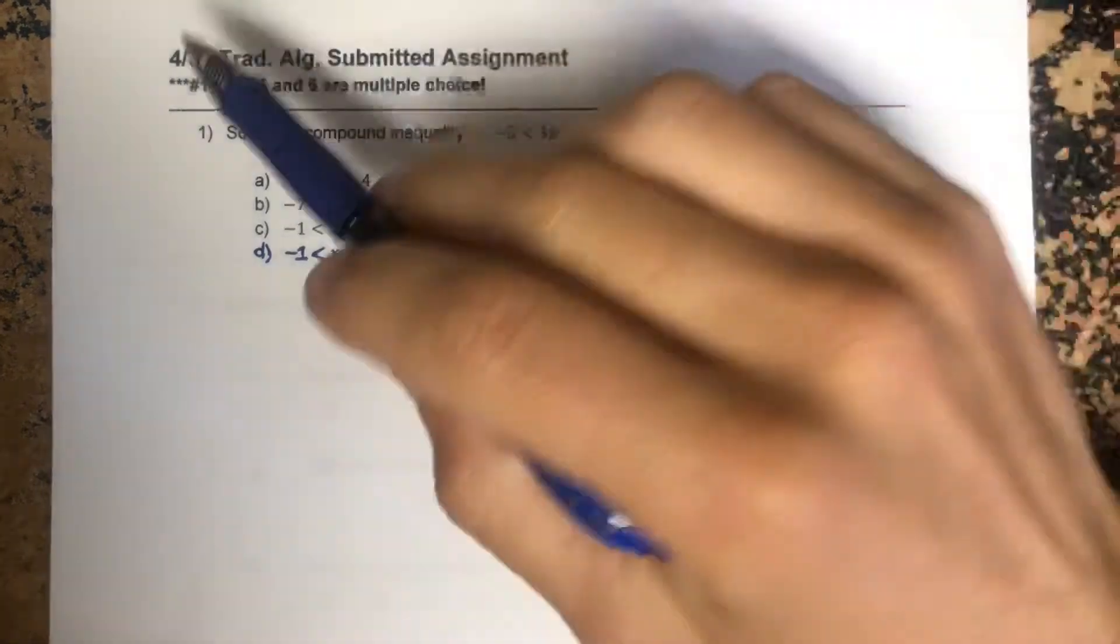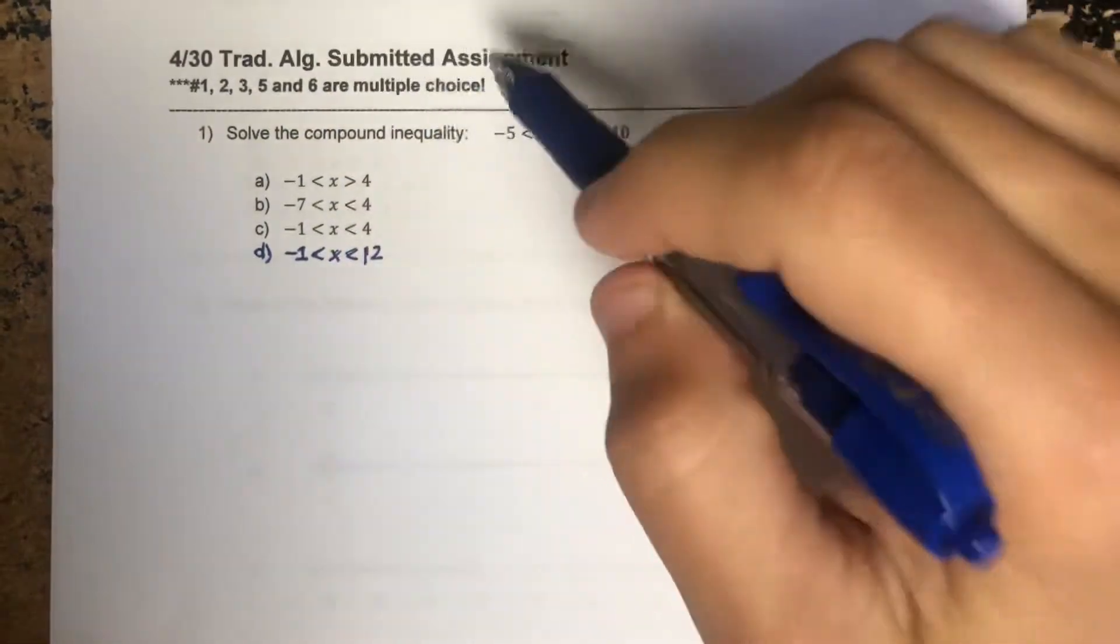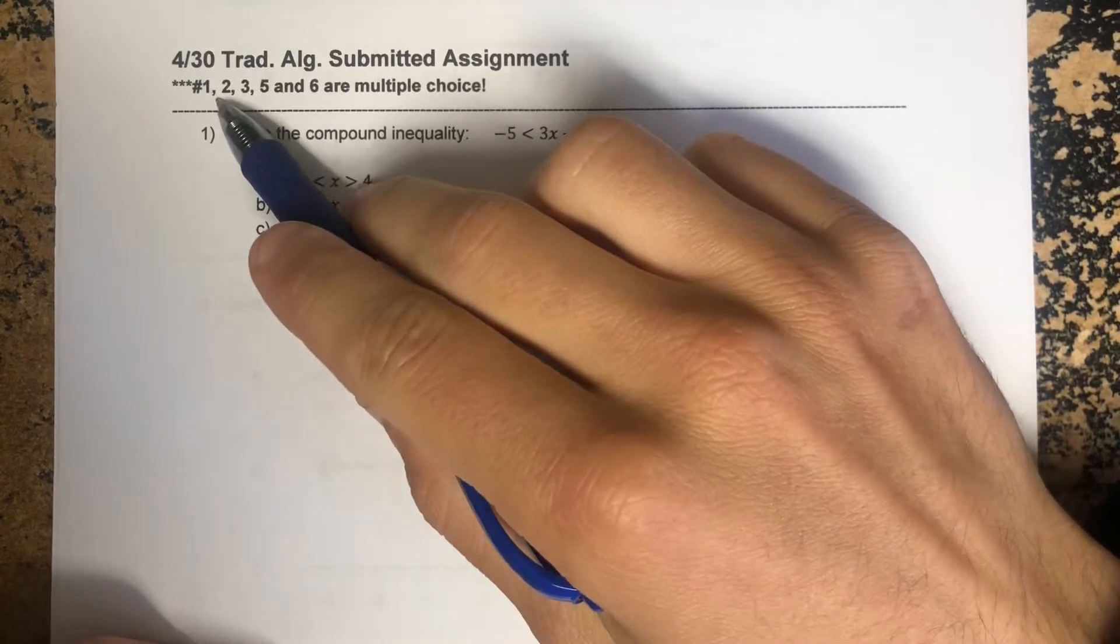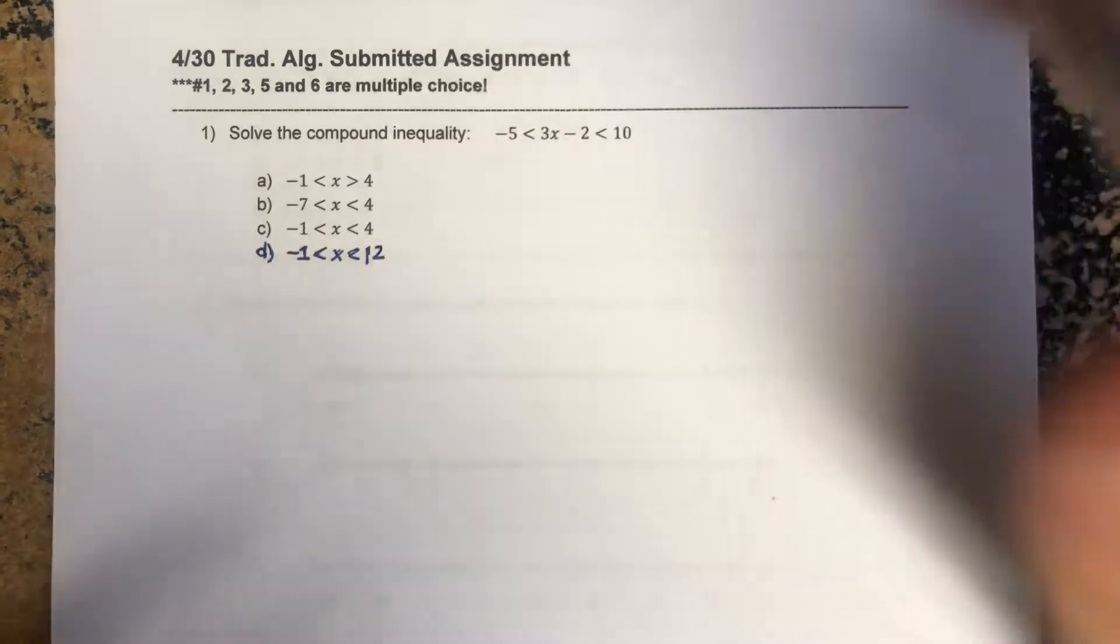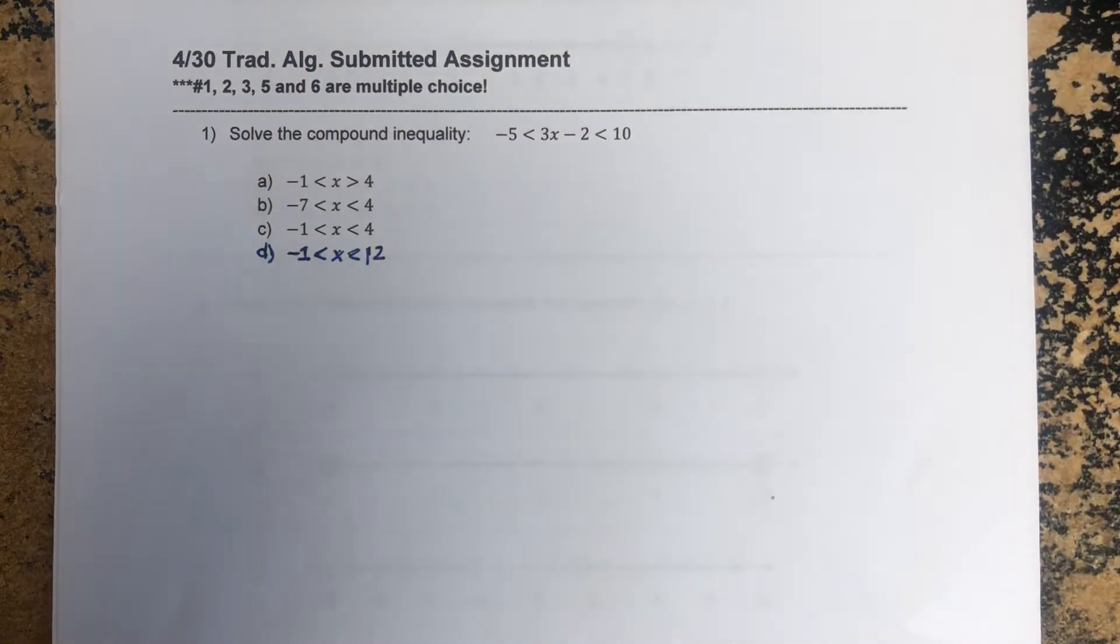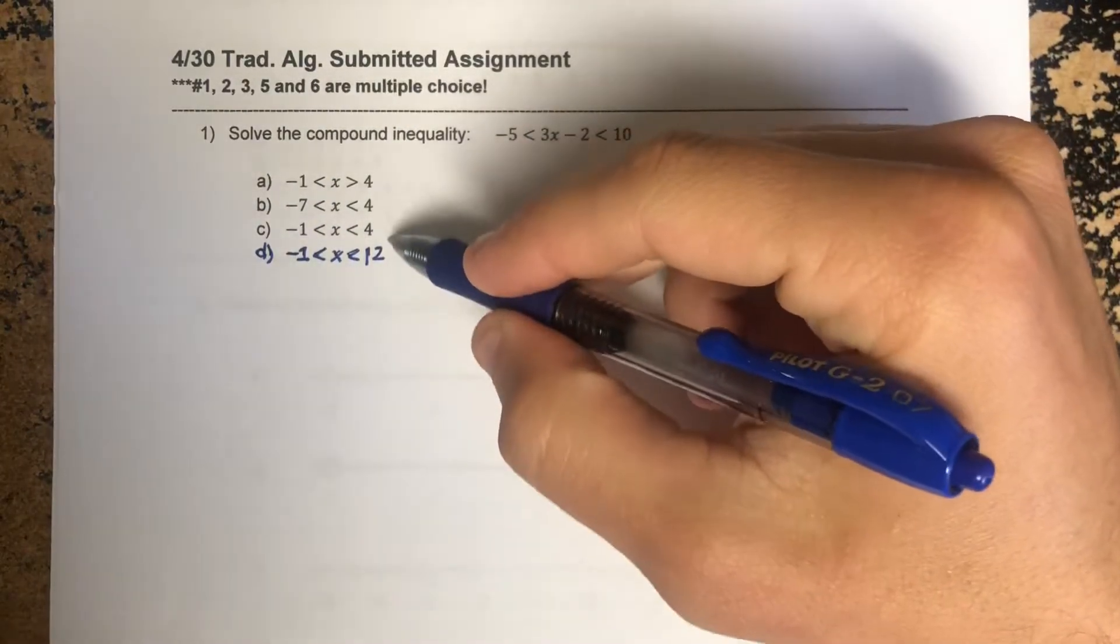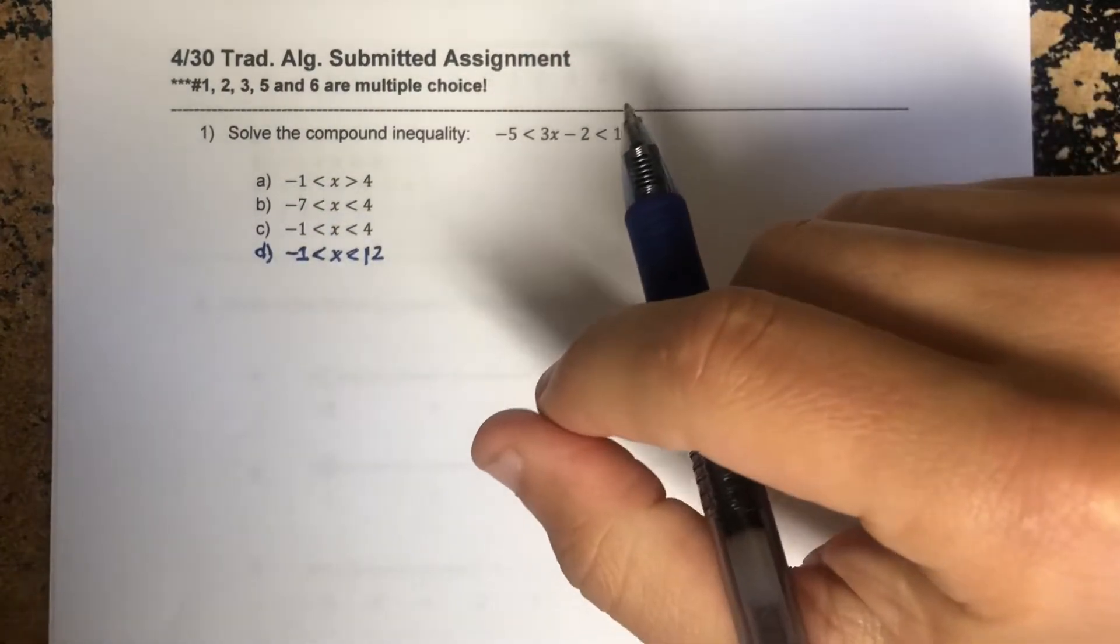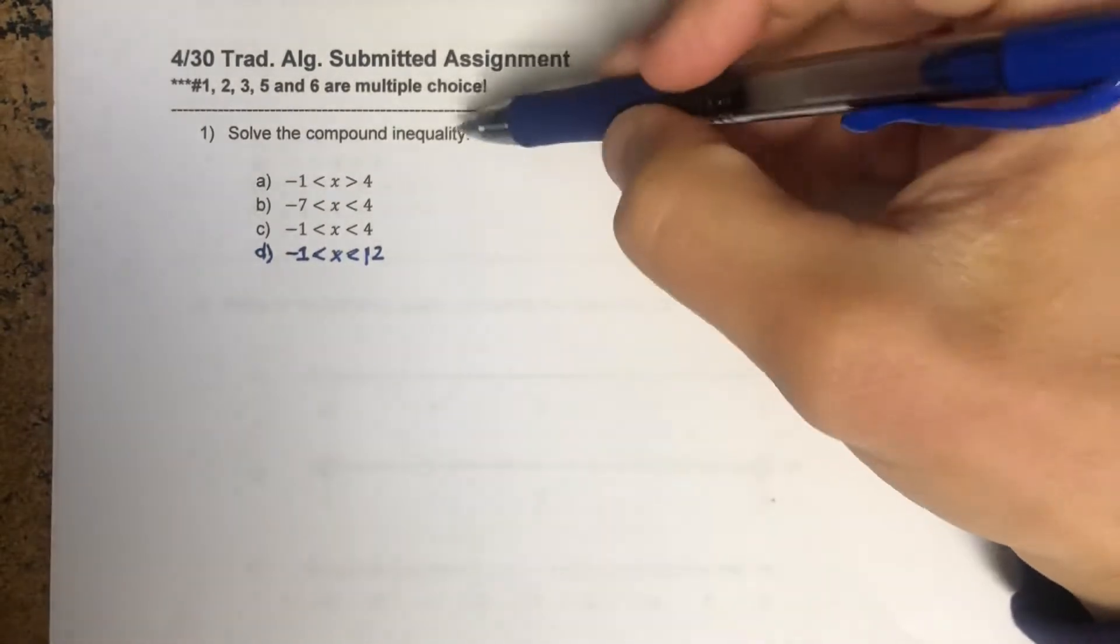Alright, here we go. April 30th submitted assignment. Hopefully you did see this. A good majority of the questions were multiple choice, so obviously you'd have some work to do. But I'm hoping you didn't think that these were questions amongst themselves. Those are the answers you should have just been able to check from your work.